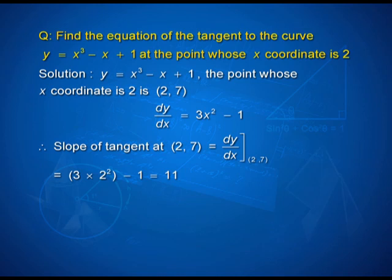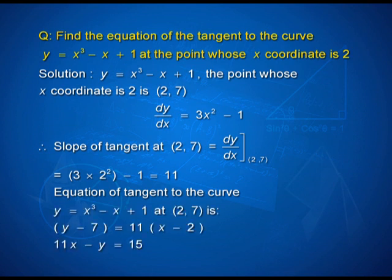Therefore, the equation of the tangent to the curve using the point–slope form would be y − 7 = 11(x − 2). Simplify and express as a linear equation in the standard form ax + by = c.